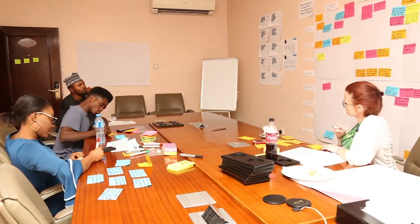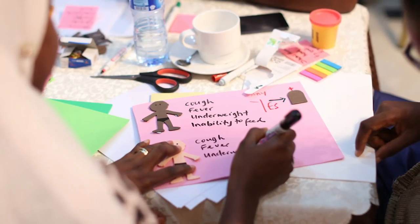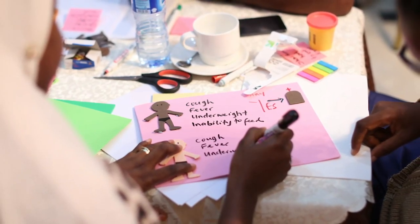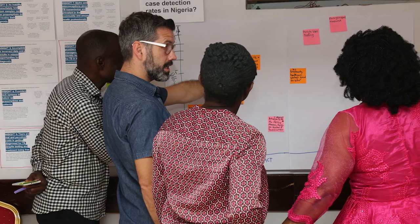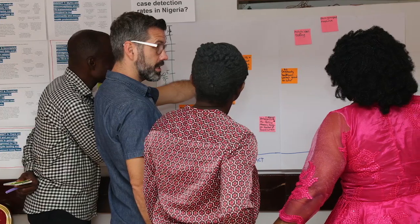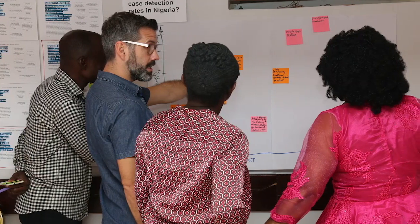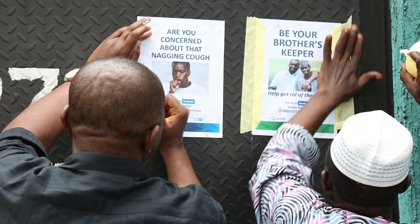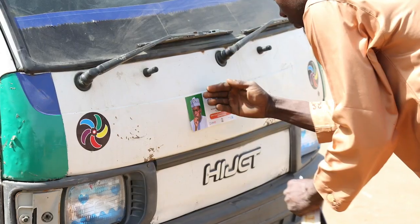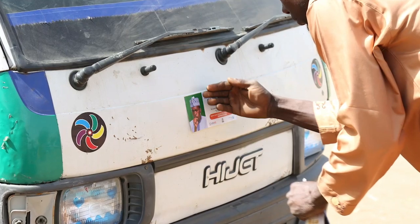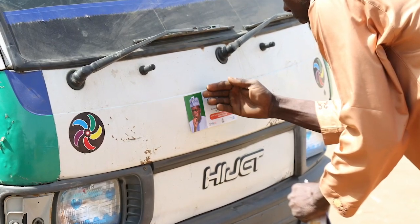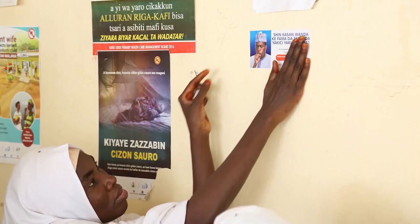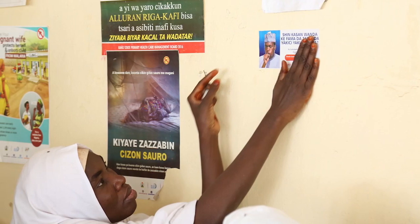We then conducted an intensive design and test phase, using the insights, personas, and journey maps from the Define phase to imagine a wide range of possible ways we might address the problems identified. We refined these ideas into smaller subsets of promising solutions, then built simple tangible prototypes to bring our ideas to life and get them in the hands of our end users.